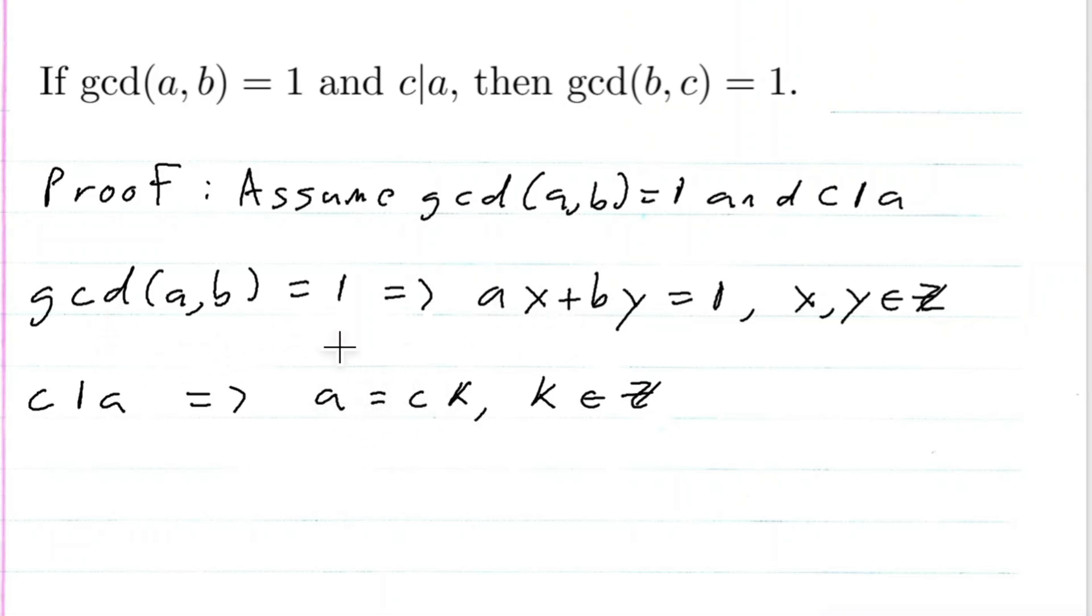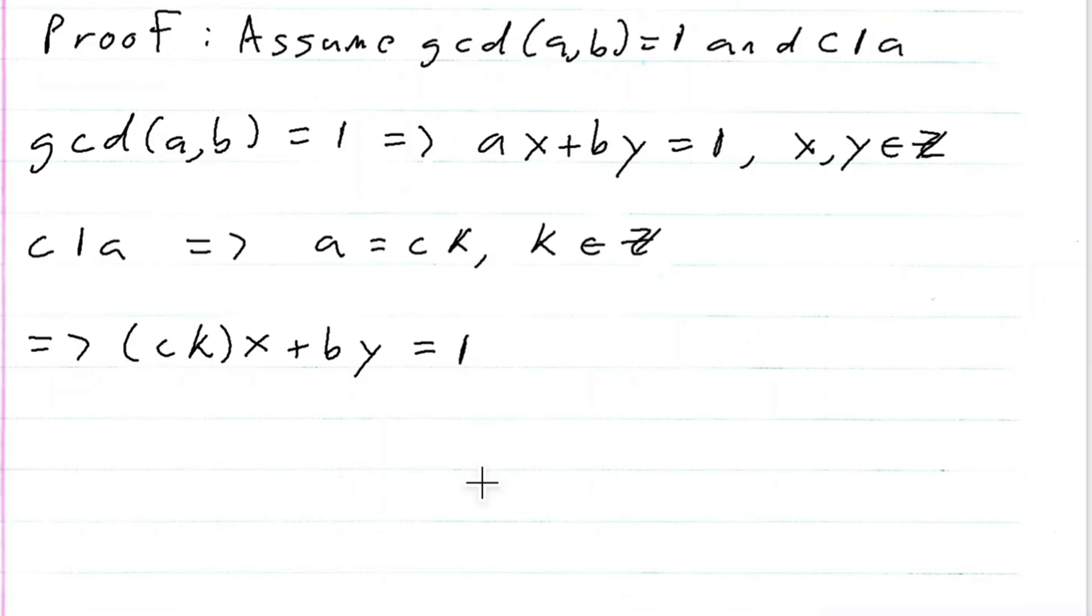So this implies that ckx plus by is equal to 1, and to get the form for the GCD of b and c exactly how I want it, this implies that by plus c times kx is equal to 1.